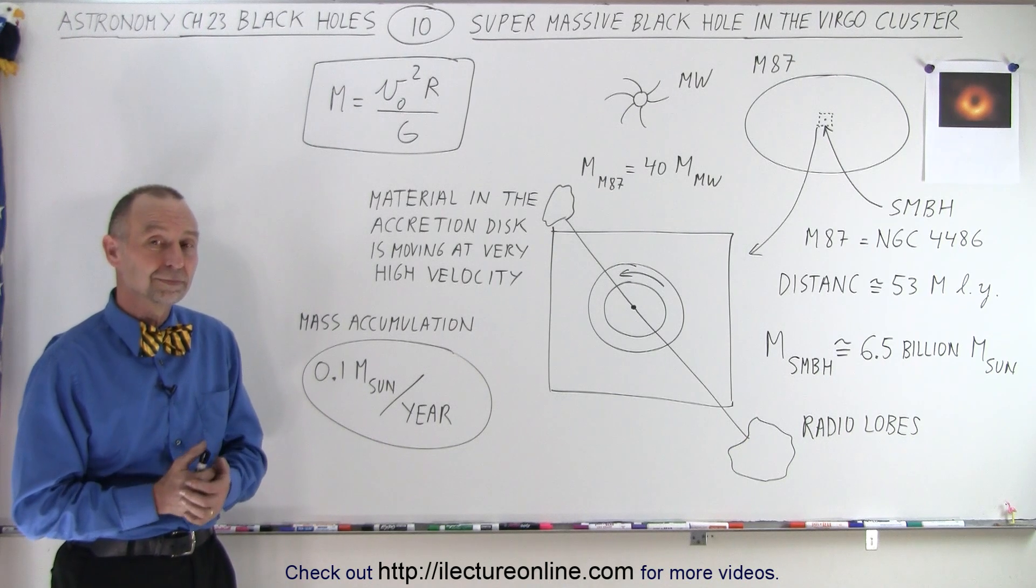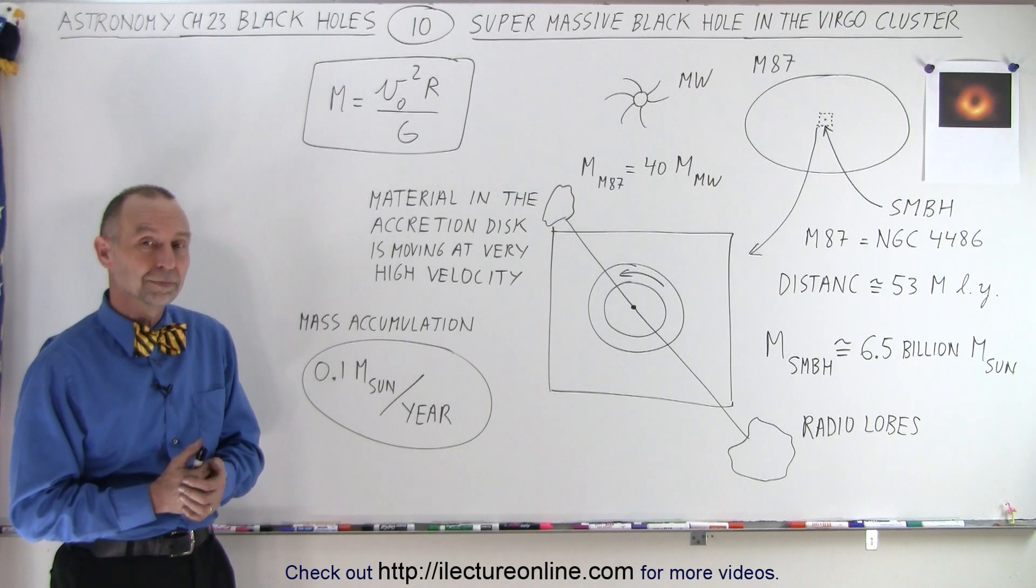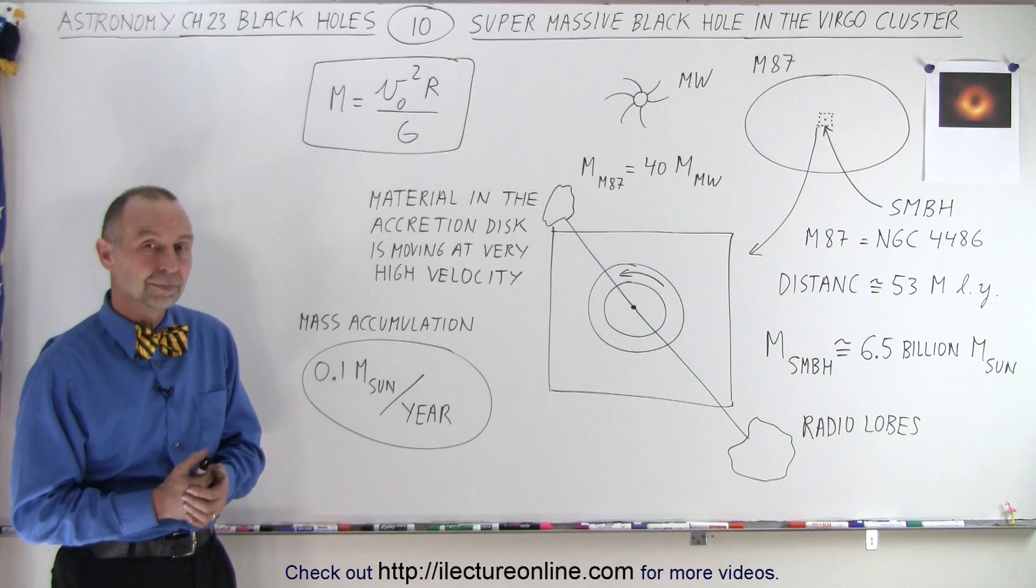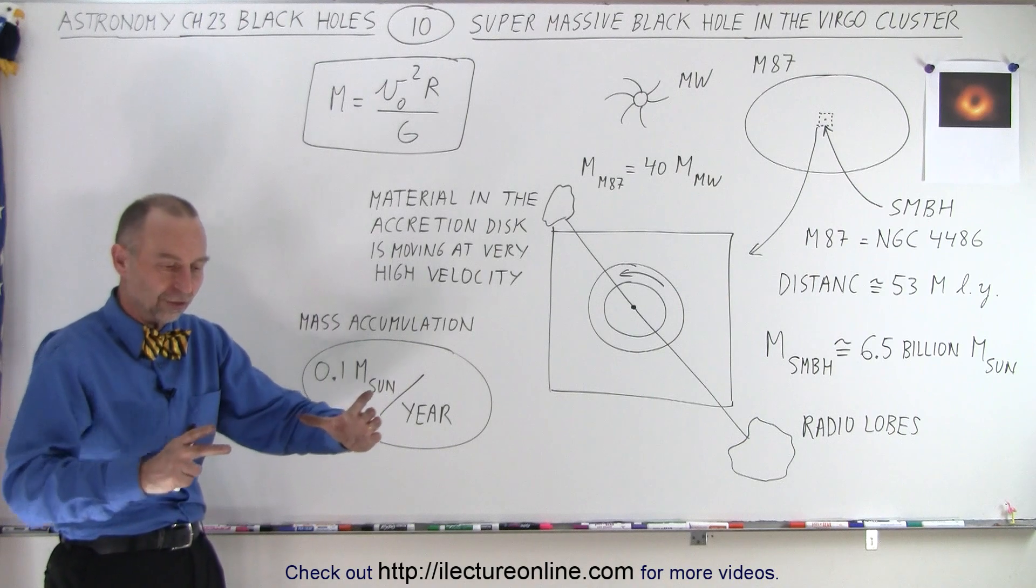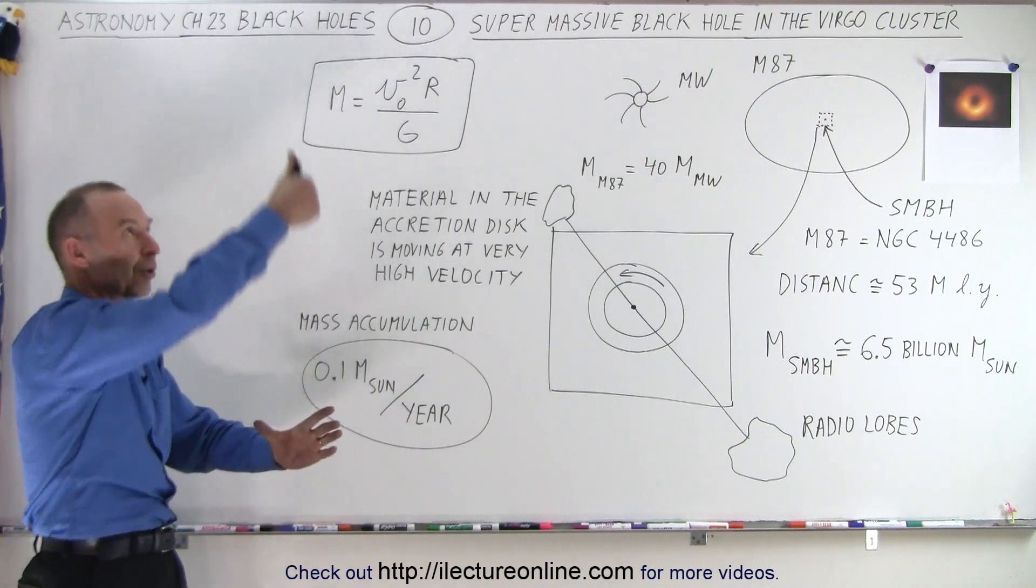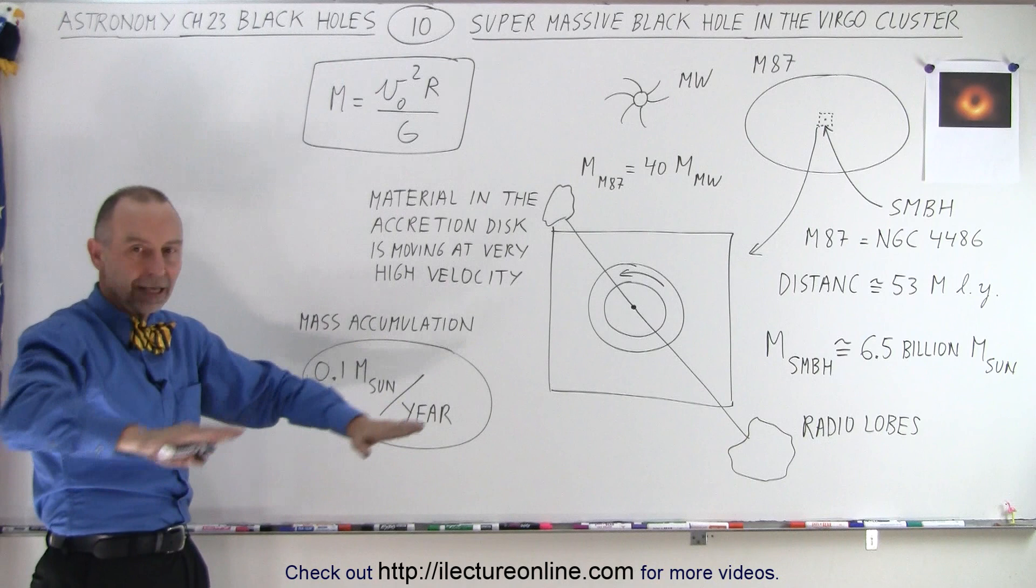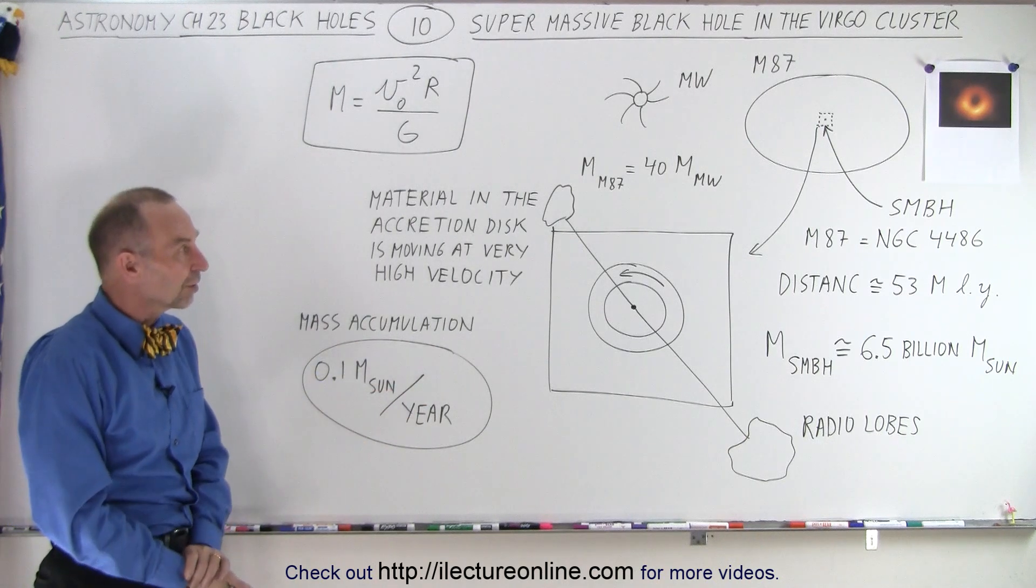Question: When the accretion disk spins around, do the radio lobes spin? Answer: No, because the radio lobes are perpendicular to the accretion disk, so the accretion disk goes around like this and the radio lobes go perpendicular to the area of the accretion disk.